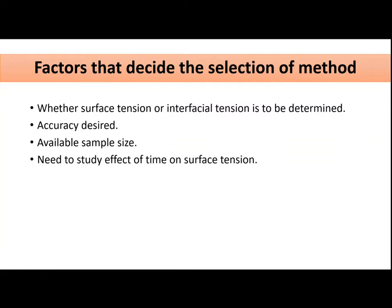Next is what are the factors which basically help us to decide that out of all those methods which method is suitable for us. The factors which basically help us are: whether the surface tension or interfacial tension is to be determined. Surface tension determine karni hai ki interfacial tension determine karni hai, wo help karega hamein decide karne mein ki hamne kaun sa method use karna hai. Kitni accuracy chahiye hamein hamare results mein. Kya available sample size hai hamare paas.